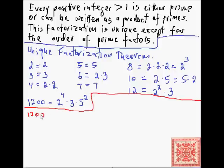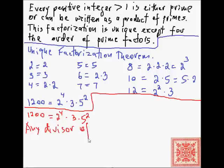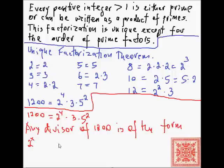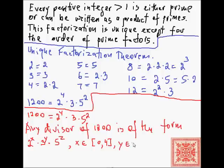Once we have a unique prime factorization — for example, 1200 is equal to 2 to the fourth times 3 to the first times 5 to the second — we can conclude that any divisor of 1200 has the form 2 to the x times 3 to the y times 5 to the z, where x is in the closed interval from 0 to 4, y is in the interval from 0 to 1, and z is in the interval from 0 to 2. This fact is frequently used in cryptography and decryption algorithms.